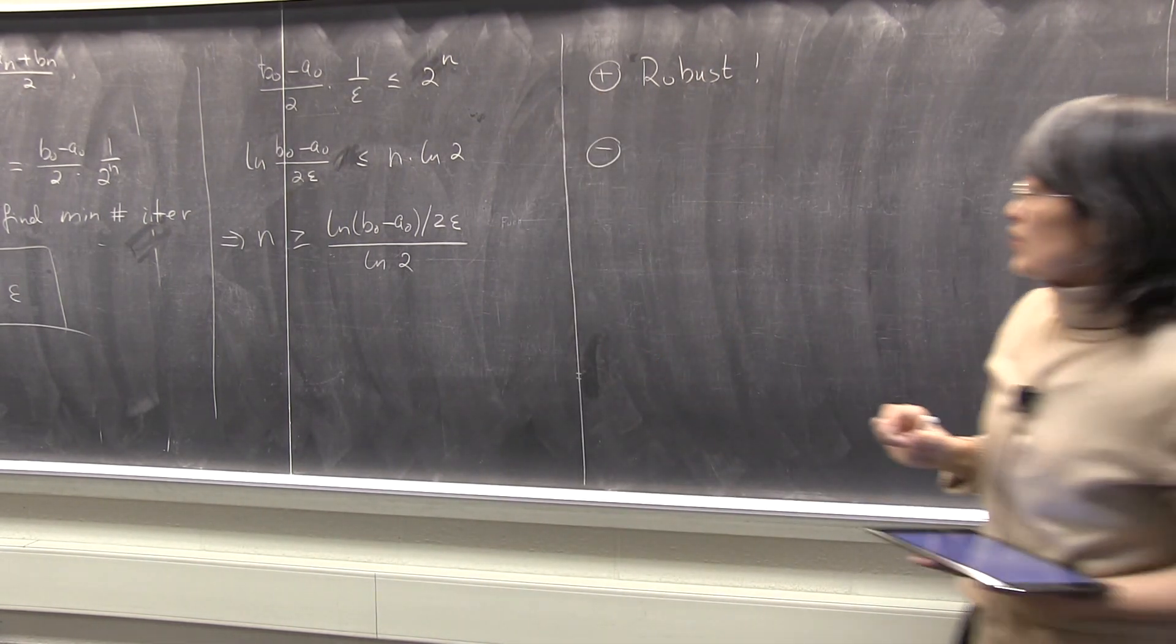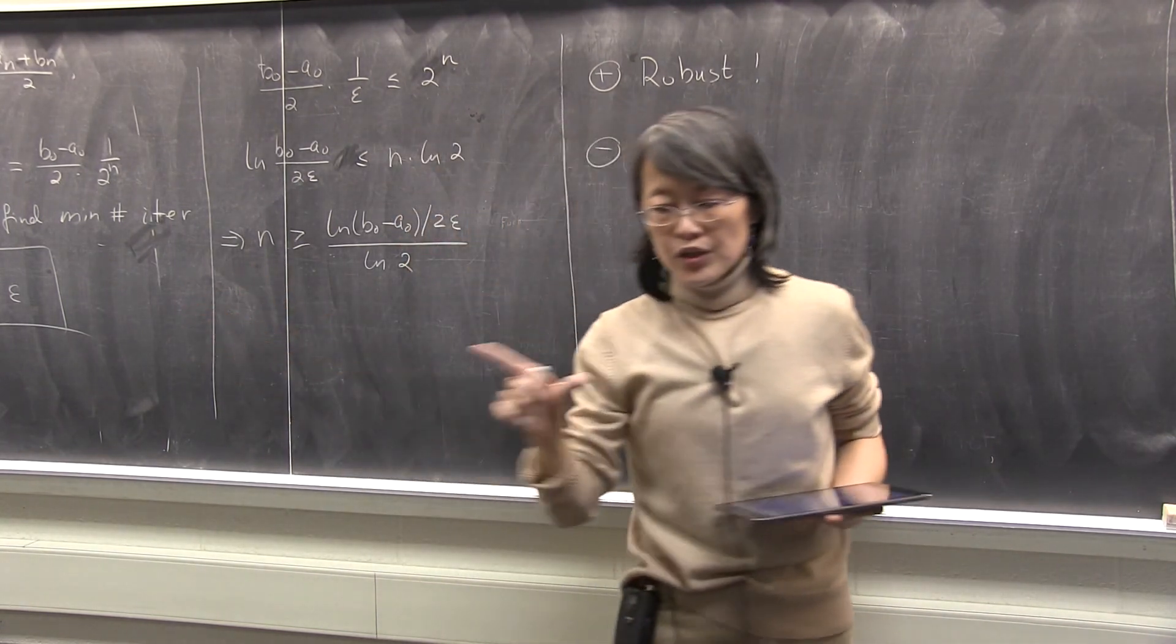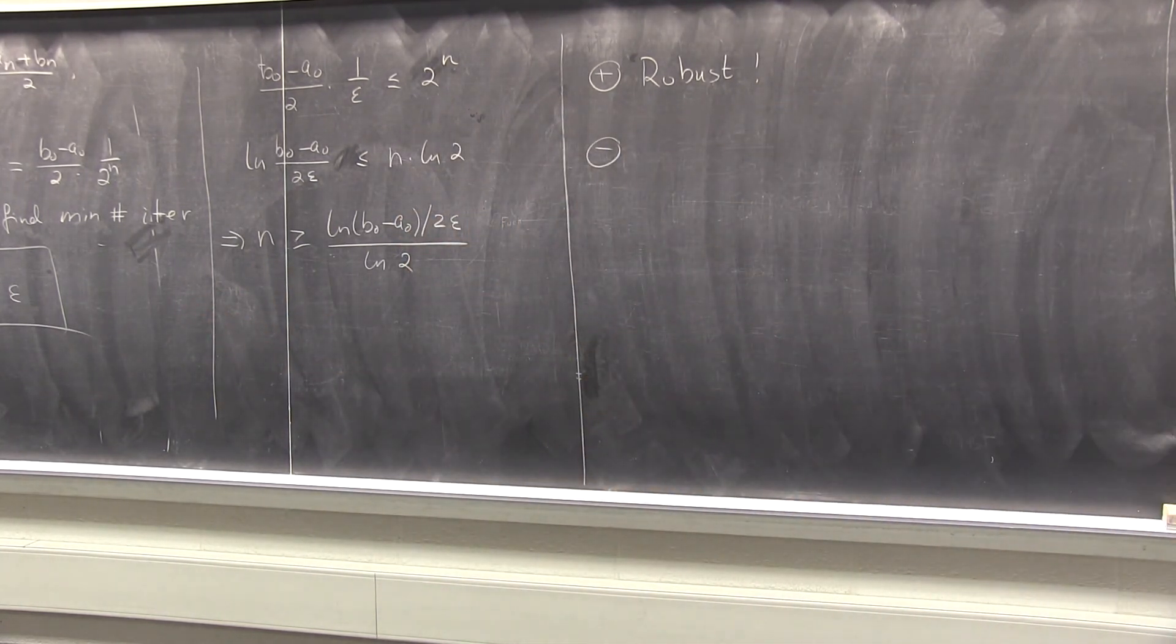But each time you are making the interval half, you can only half your error through one iteration. As I say, you don't have anything to compare with. Later on, we will learn methods that does something dramatically better than this. So here, say for example, interval from A to B is size one, and I give you an error tolerance, 10 to the negative six. You have to perform many, many, many iterations, right? About 50, 60 iterations to get that accuracy.